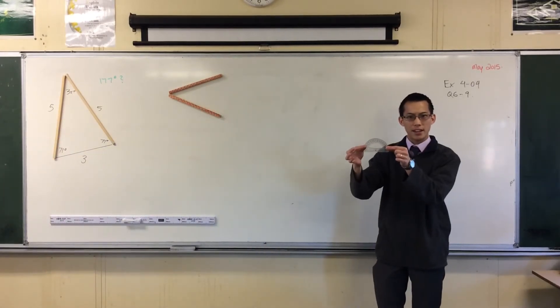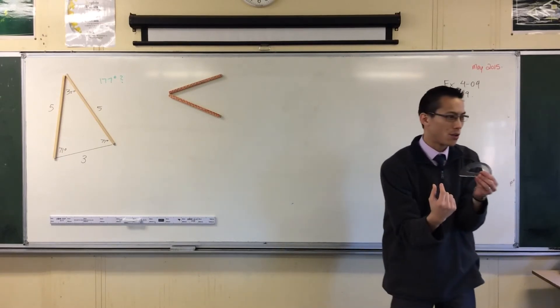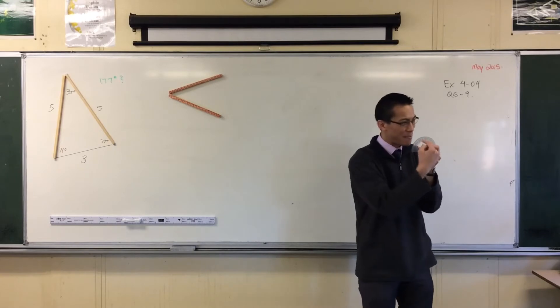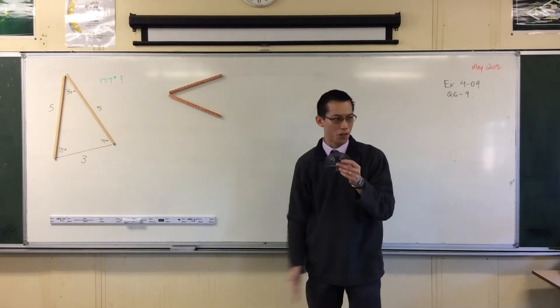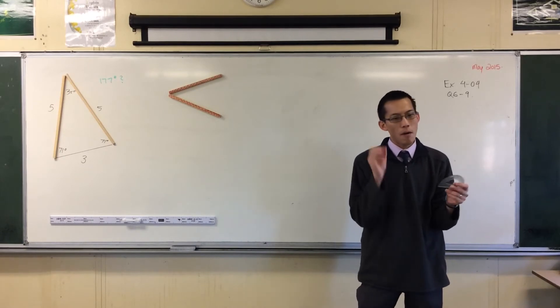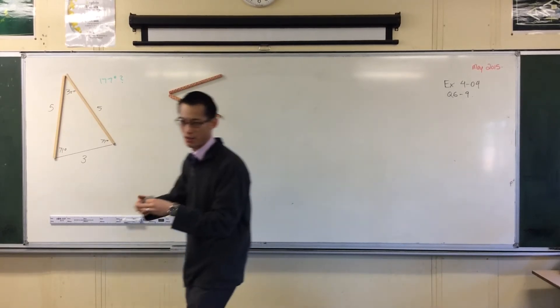You've got this instrument here, right, and well it's not perfect, and you can only measure so well. Like my eyesight is terrible, so between one degree I'm not sure if it's 35.1 or 35.2, can't tell. So I'm only so accurate. We have what we call here limits of accuracy.